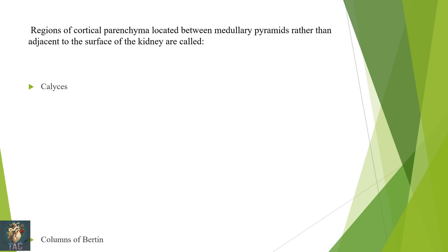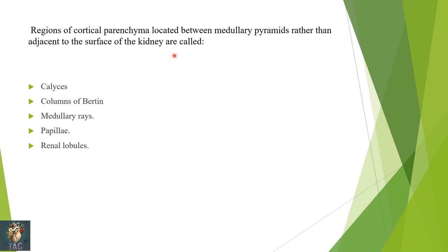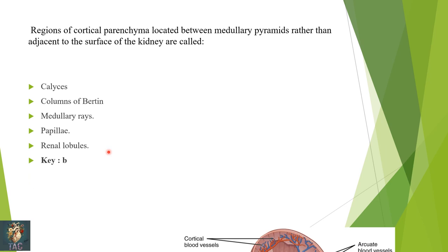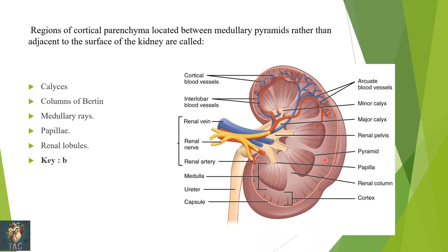Next: the region of cortical parenchyma located between medullary pyramids rather than adjacent to the surface of the kidney is called — calyces, columns of Bertin, medullary rays, papillary, or renal lobules? In this diagram you can see the renal medullary pyramids and the cortical area between them forming the columns of Bertin. Correct option is B.